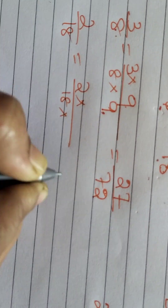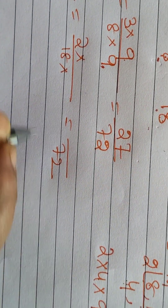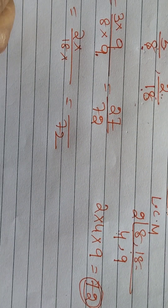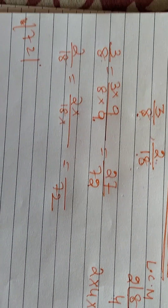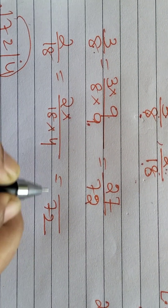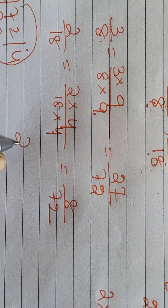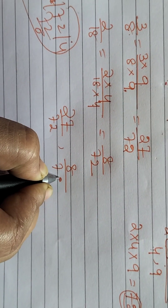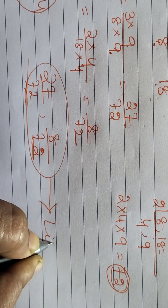What we multiply with the denominator, we should multiply the same number with the numerator. So we multiply 9, and 9 threes are 27. For the other fraction, 2 by 18: we equalize the denominator to 72. 72 divided by 18 — if you multiply 4 with 18, multiply the same number 4 with numerator 2, giving 8. So we get 27 by 72 and 8 by 72. Both have the same denominator, so these two are like fractions.